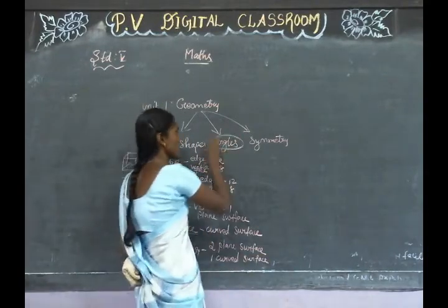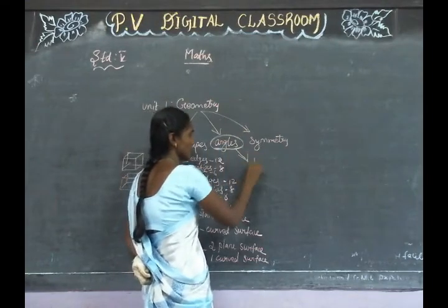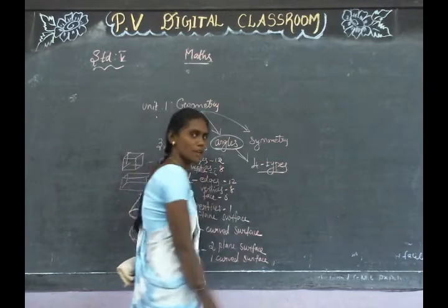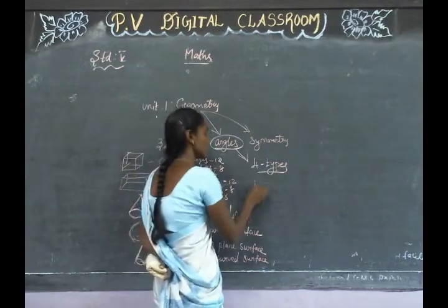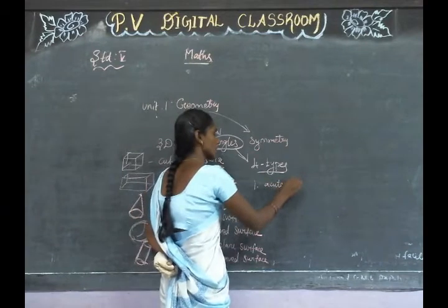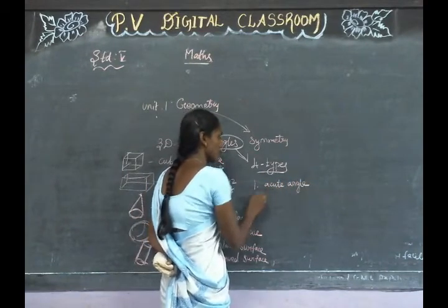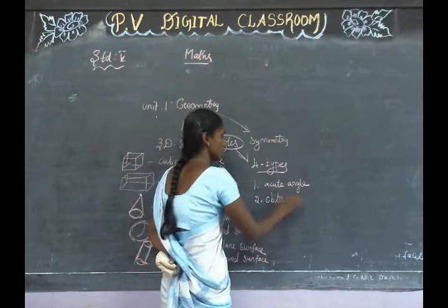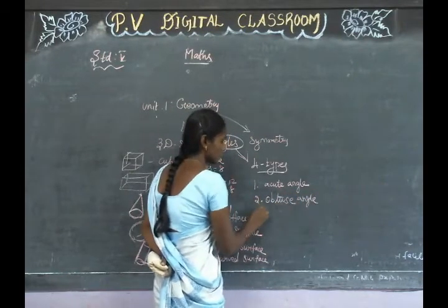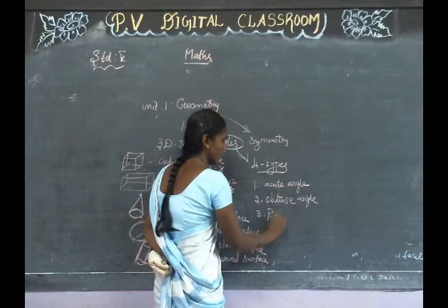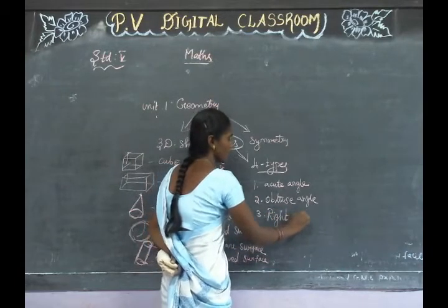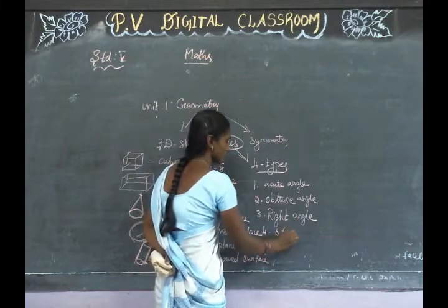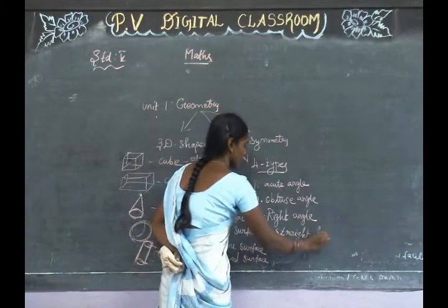Then next is angles. How many types of angles are there? Four types of angles. First: acute angle. Then next: obtuse angle. Next third one: right angle. Fourth one: straight line.